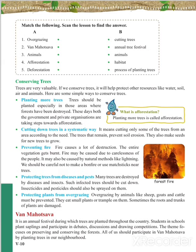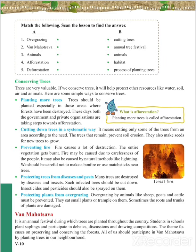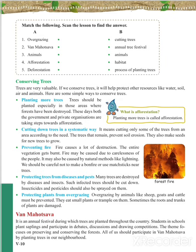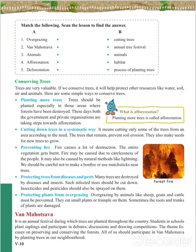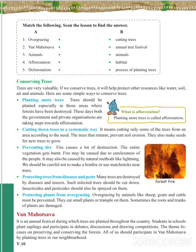The second method is cutting down trees in a systematic way. Systematic way means only some of the trees from an area are cut according to the need — whatever we are planning, only that many trees should be cut. The trees that remain help prevent soil erosion and also make seeds for new trees to grow.